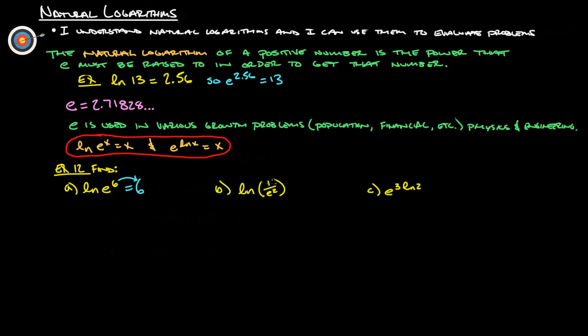Natural log of 1 over E squared. Now we can rewrite this. We can move that E squared up to the top, and it turns into E to the negative 2nd. So now that it's in that form, LN E to the power there is going to equal whatever that power number is. So this will just give us simply negative 2.